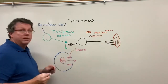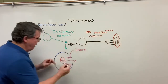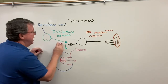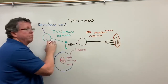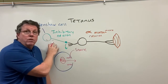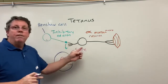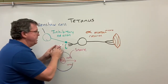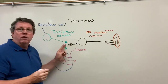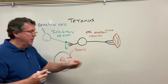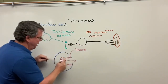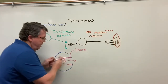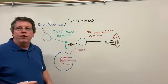Normally, when there is too much muscle activity, the Renshaw cell gets a signal saying there's too much going on. So it releases its neurotransmitter via the snare proteins to calm the alpha motor neuron down and allow the muscle to relax. That's the way it normally works.